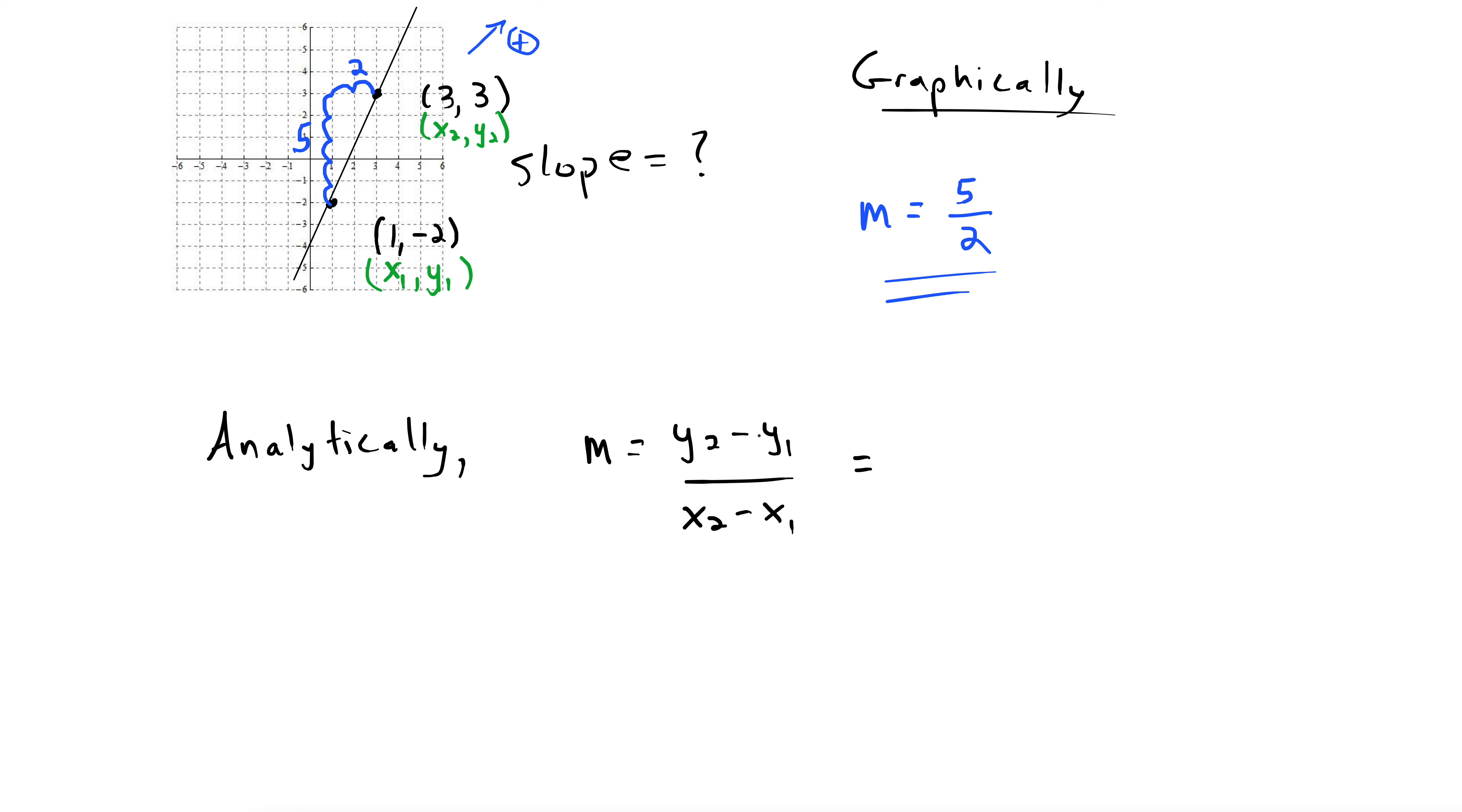Plugging in. And again, you want to have this equation memorized. Here we go. y2 minus y1. 3 minus negative 2. So you need to include the negatives with these. There's the rise part. Now for the run. 3 minus 1. 3 minus negative 2 is 3 plus 2, which is 5 over 3 minus 1 is 2. There we go.